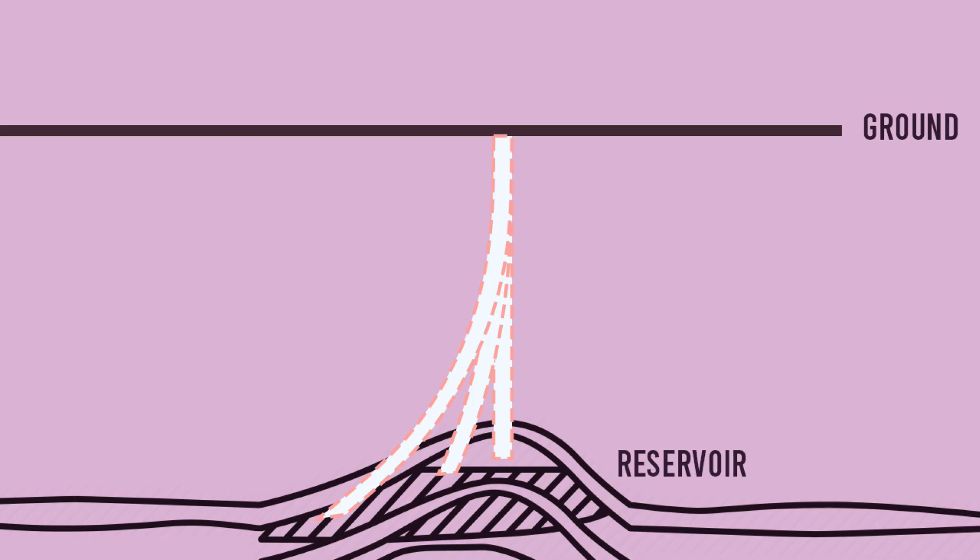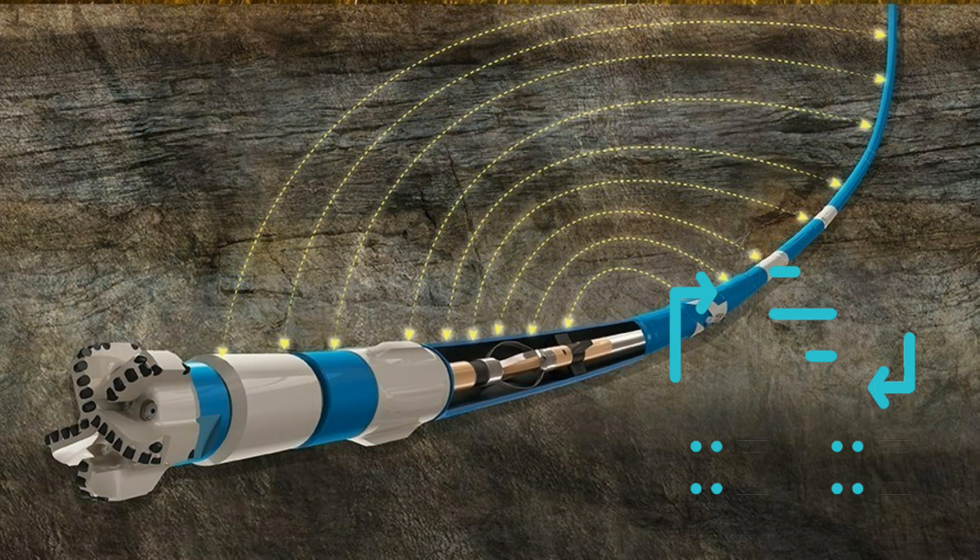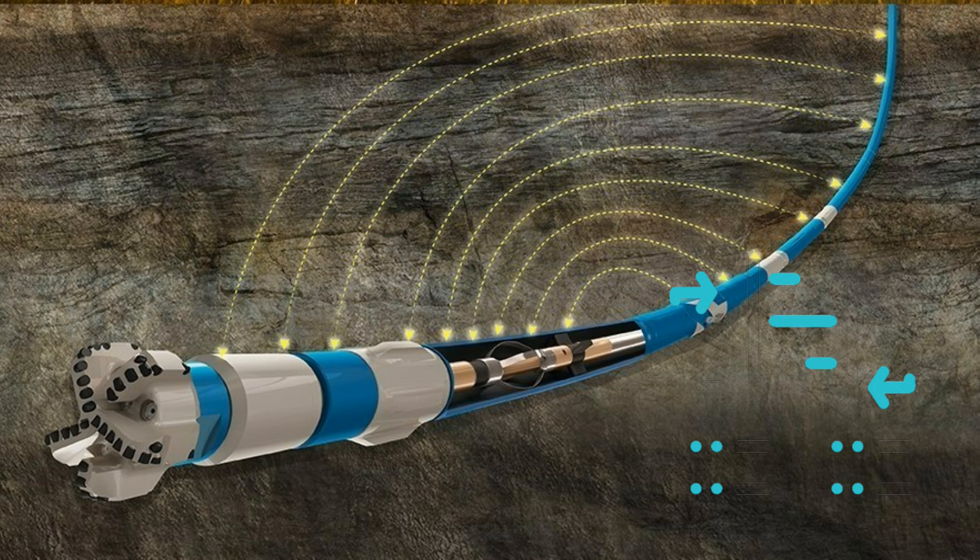With directional drilling, the wellbore can be steered at different angles. We use advanced technologies like downhole motors and steerable drill bits, which are designed to change the direction of the wellbore in real time while drilling. These tools are equipped with sensors that send data back to the surface, allowing drillers to make precise adjustments guiding the wellbore towards its target.